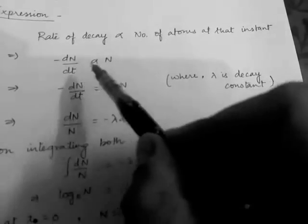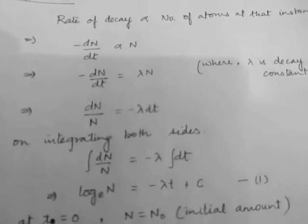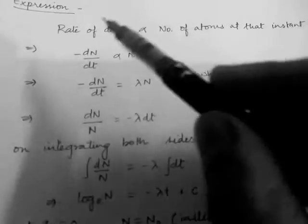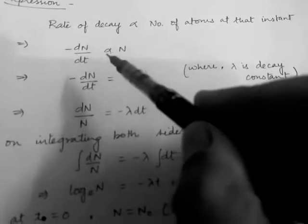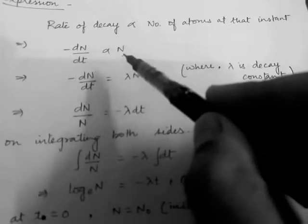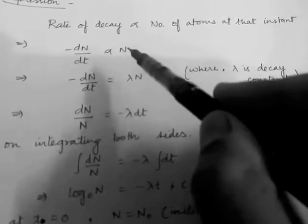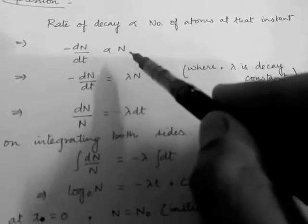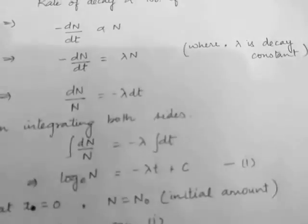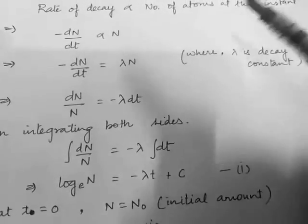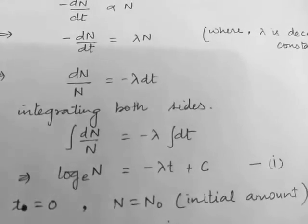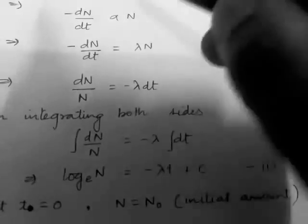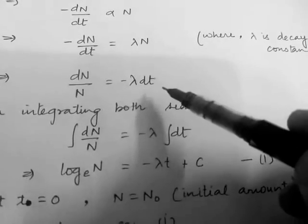Mathematically, minus dN/dt is directly proportional to N. The minus sign is because it is decay — rate of disintegration — and N represents the present number of atoms. So minus dN/dt is equal to λN, where λ is the decay constant. Rearranging: dN/N is equal to minus λ dt.